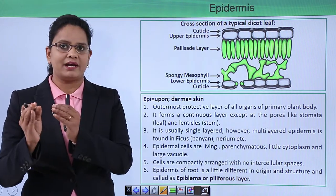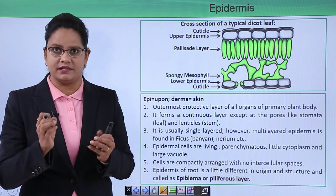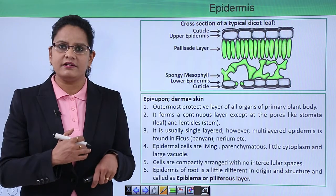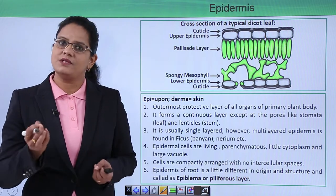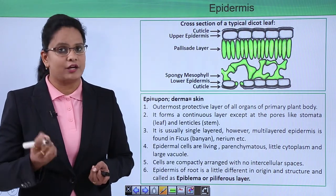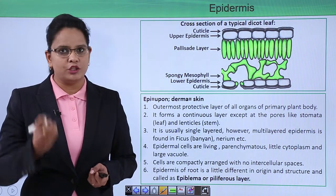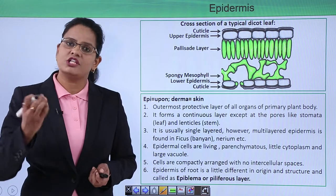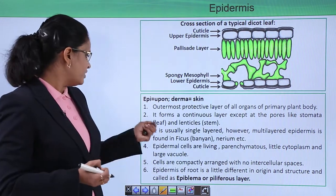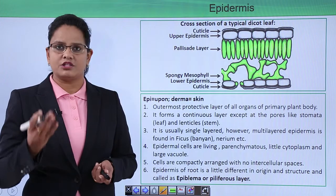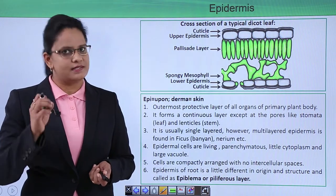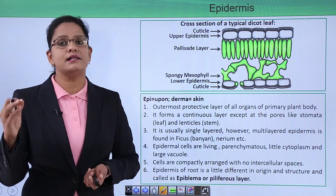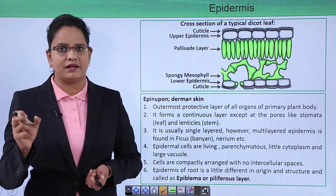The epidermis forms a continuous layer, meaning the cells are very compactly arranged with no holes. Just as our skin cannot have holes that allow external agents to enter, similarly the epidermis has no pores except for a few minute openings responsible for gaseous exchange, which helps in photosynthesis. These pores are the stomata in the leaf and the lenticels in the stem.